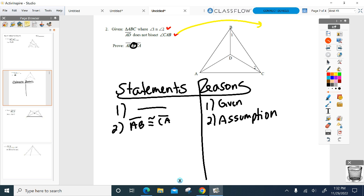And how am I going to contradict it? Somewhere in my statements, I don't know, it could be step five, eight, nine, I don't know. Somewhere in my statements, I'm going to have this written down. AD does bisect CAB. Somewhere in my proof, I'm going to have to have written that down. How am I going to get there, though? That's our job right now together. Get me to this point in the proof that AD does bisect CAB.